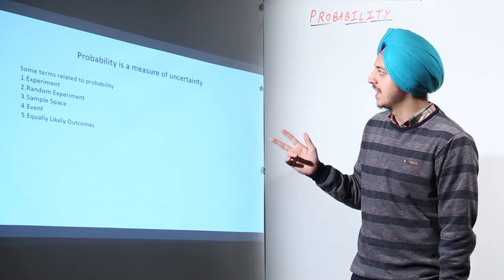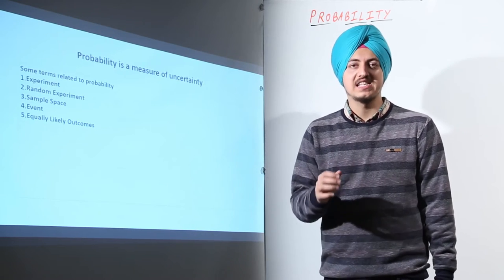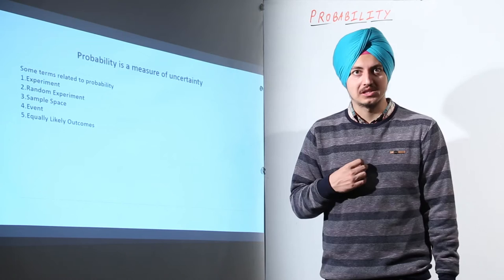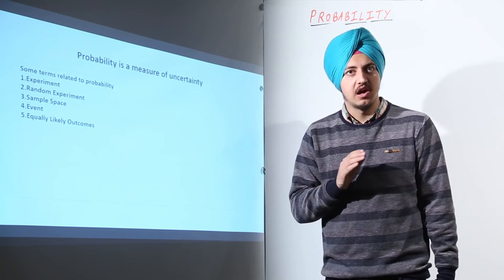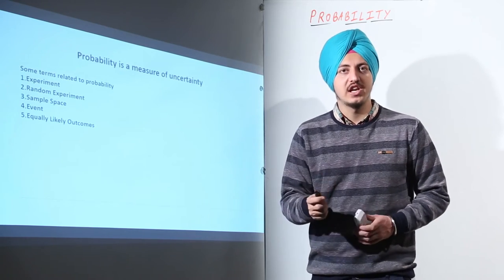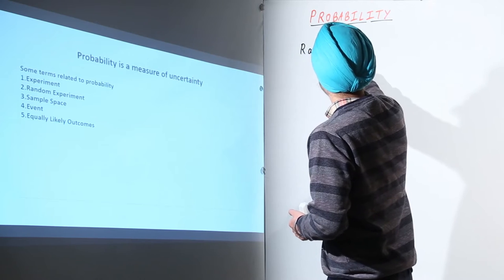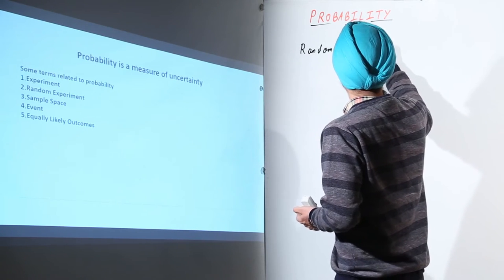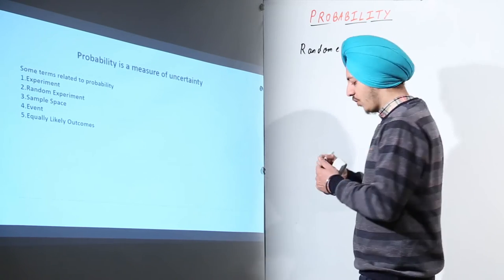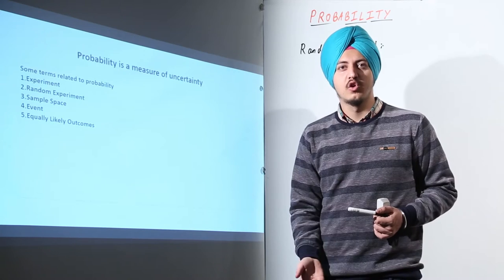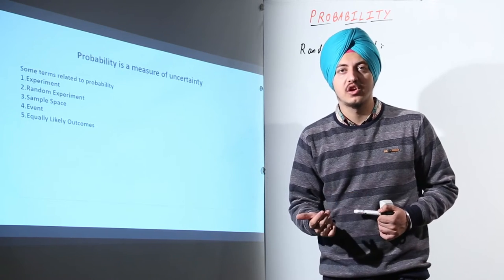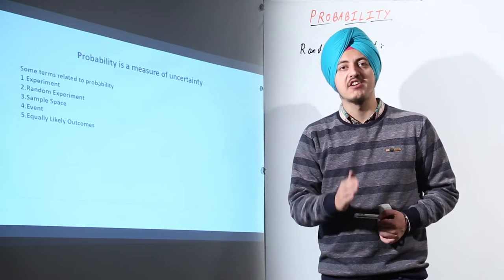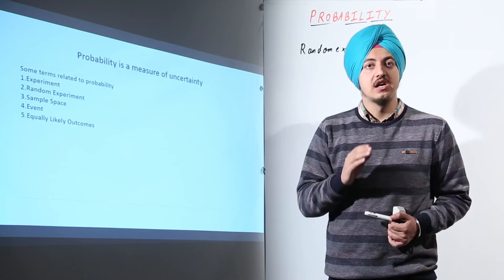The second term is random experiment. A random experiment is any experiment that yields more than one outcome, and those outcomes are not known to us in advance — we do not know whether it will yield outcome A, B, or C. Examples of random experiments are rolling a dice or tossing a coin. When we toss a coin, we do not know whether heads or tails will face up. When we roll a dice, it can be anything from one to six, so it is a random experiment.